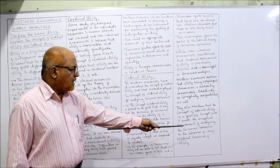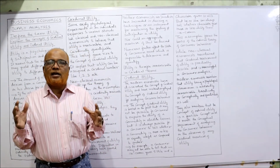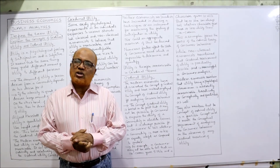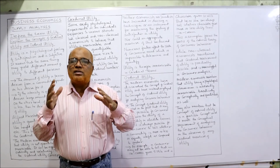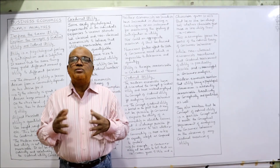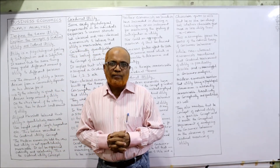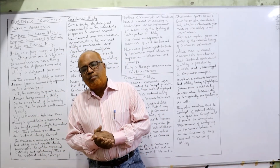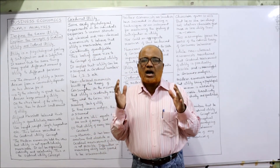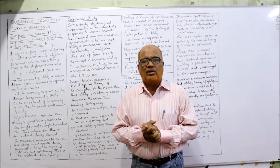In the absence of any cardinal measure of utility, we don't have any technique or specific apparatus to calculate satisfaction or utility. In such circumstances, the ordinal concept of utility is more feasible for measuring satisfaction. So in this video I have explained the concept of utility, what is the cardinal concept of utility, and what is the ordinal concept of utility.